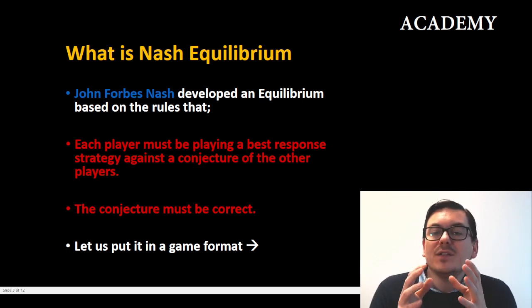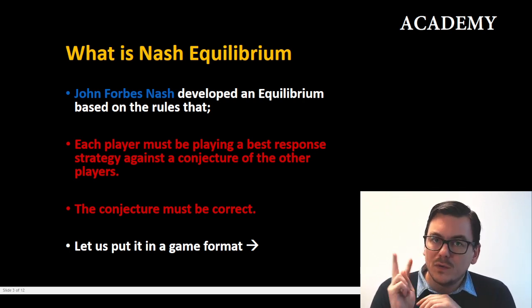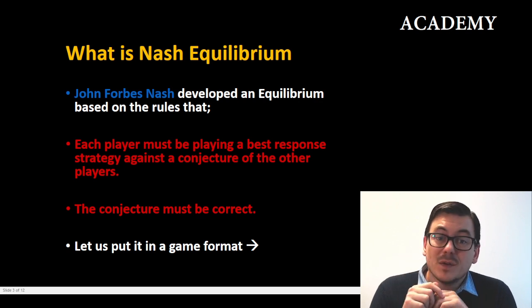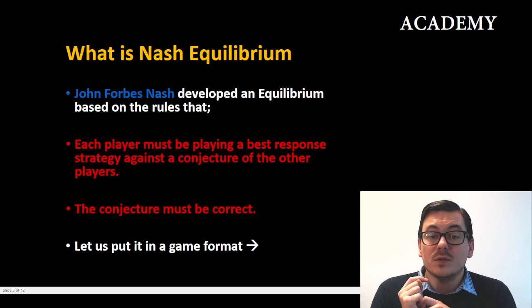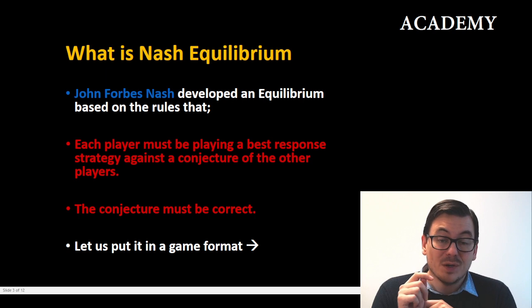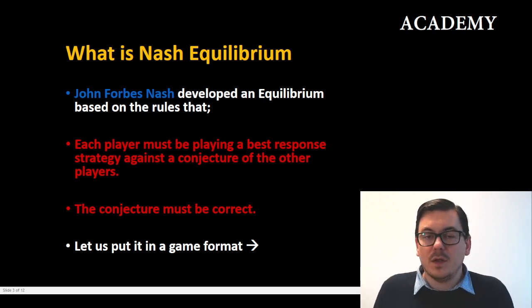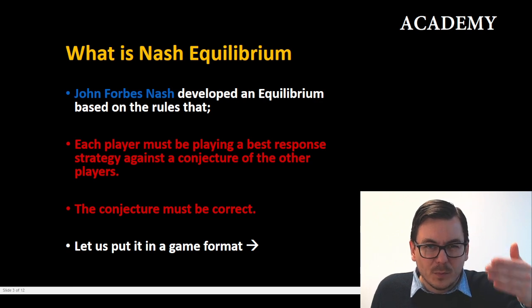John Forbes Nash developed an equilibrium based on two certain rules. First, each player in a game must be playing a best response strategy against a conjecture of the other players. The second rule: the conjecture must be correct. We will put this into a game format so it makes more sense.